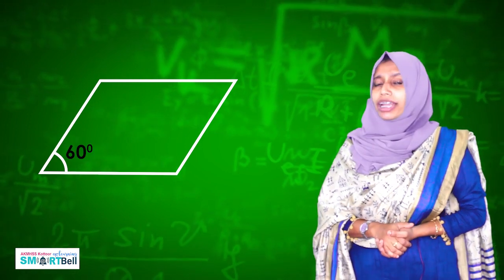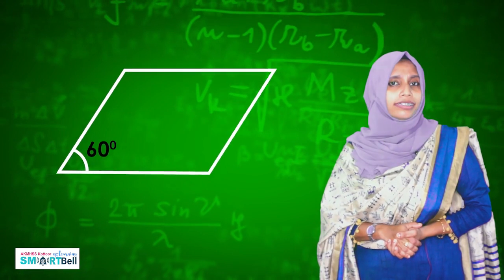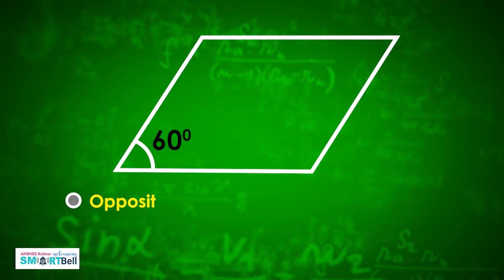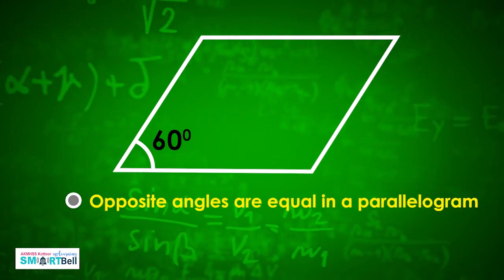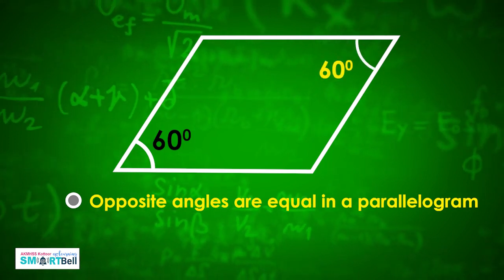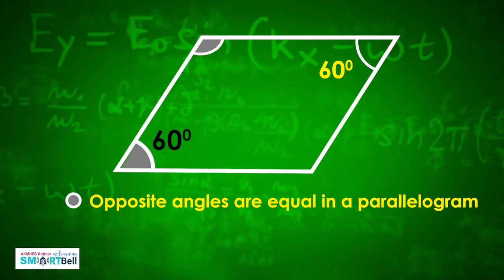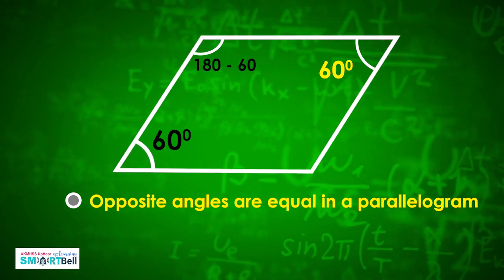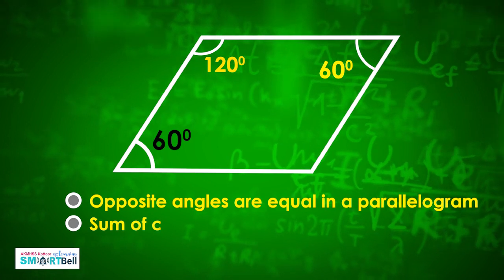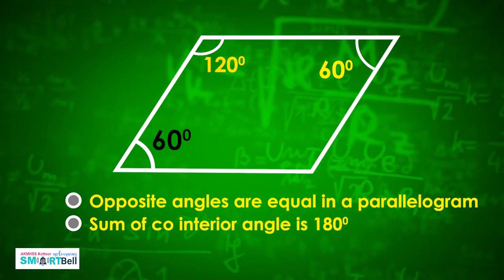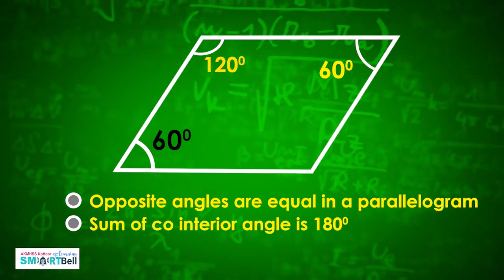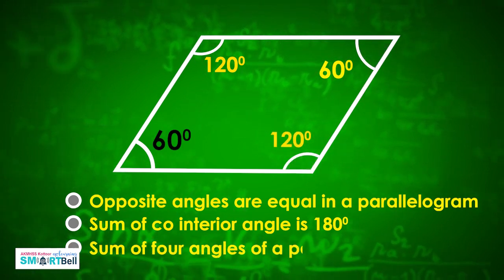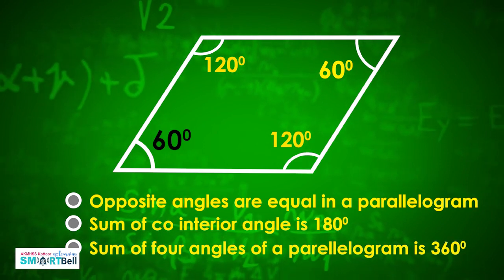Look here — can you write the measures of three angles? What is the sum of all angles? We know opposite angles are equal in a parallelogram. So here, 60 degrees. The sum of two angles on the left is 180 degrees, so here 180 minus 60 equals 120 degrees. We also know that the sum of co-interior angles is 180 degrees, so the angles on the right also sum to 180 degrees. Therefore, the sum of all four angles of a parallelogram is 180 plus 180, which is 360 degrees.